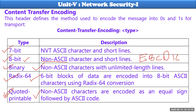Let us see how RADIX64 and quoted printable encoding work. All these things will be determined based on the type specified by your host. If type is 7-bit, data is sent in 7-bit form. If type is 8-bit, data is sent in 8-bit form. If type is binary, data is sent in binary. Or it could be RADIX64 or quoted printable form.